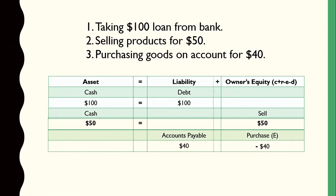The third transaction is purchasing goods on account for $40. You are not paying cash instantly, so it creates accounts payable — you have to pay back that amount someday. On the liability side, it increases your liability by $40. And since you purchased something, it is an expense, even though you're not paying right now. So on the owner's equity side, you deduct $40 because it creates an expense.